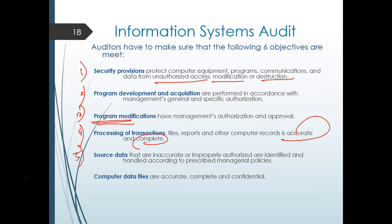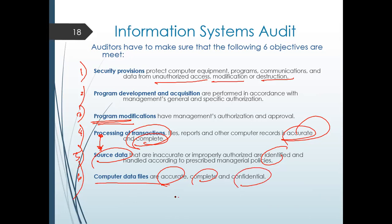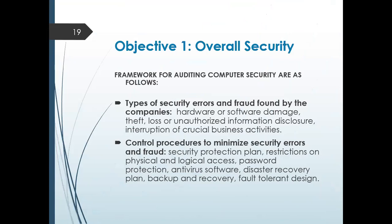Number five, you should also make sure that source data that are inaccurate or improperly authorized are identified, because in order to identify the completeness and accuracy of the transaction, you need your source documents. And of course, you test your computer data files if they are accurate, complete, and confidential — the CIA triad: confidentiality, integrity, and availability. For the overall objective — your security — you identify types of security, errors and fraud found by the company, and control procedures to minimize security errors: security protection plans, restrictions, logical access, your most famous password, antivirus software, backup and recovery, and fault-tolerant design.